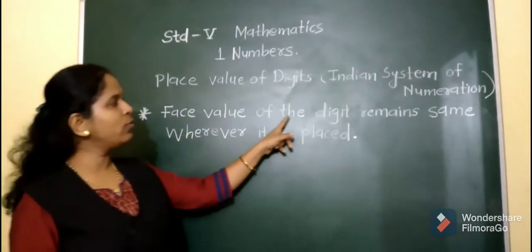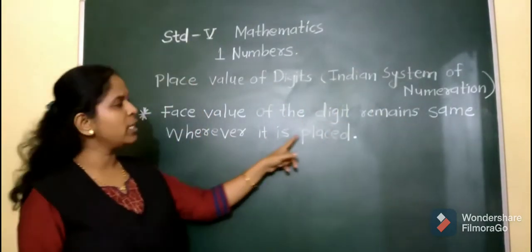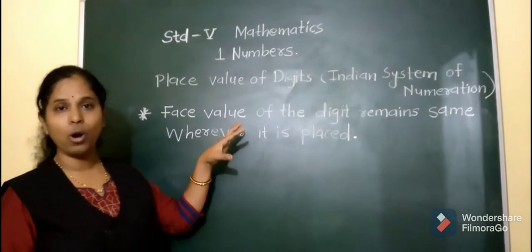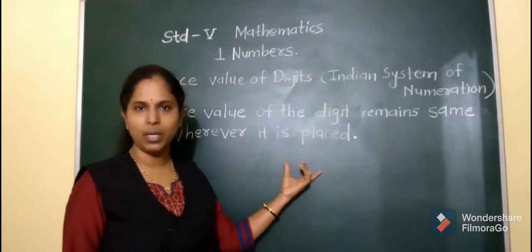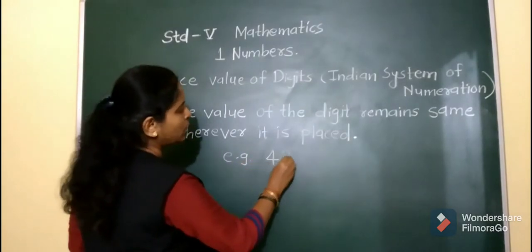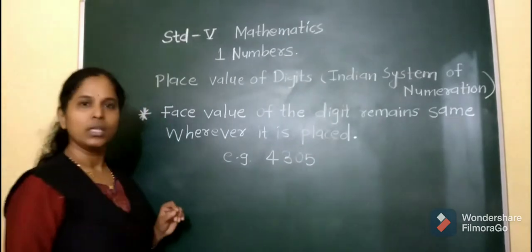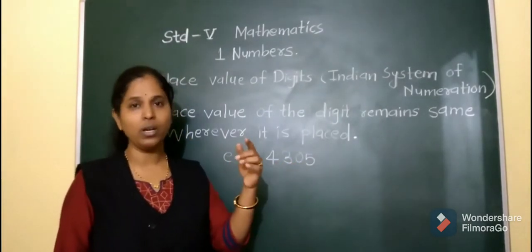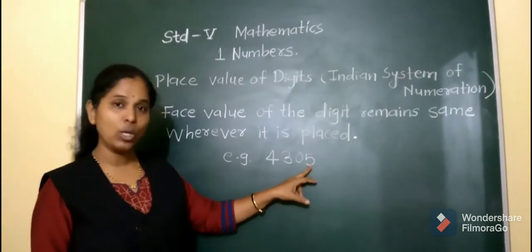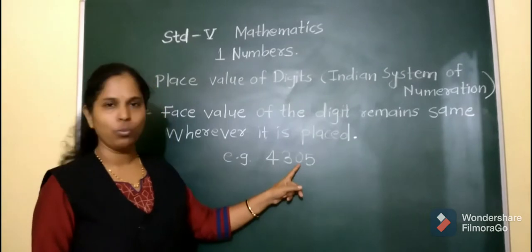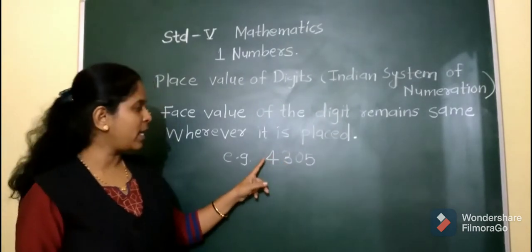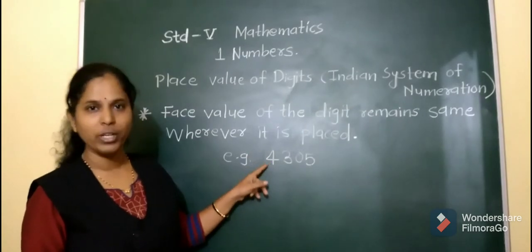The face value of a digit remains the same wherever it is placed. Face value means the digit itself. For example, in 4305: the face value of 5 is 5, the face value of 0 is 0, the face value of 3 is 3, and the face value of 4 is 4.